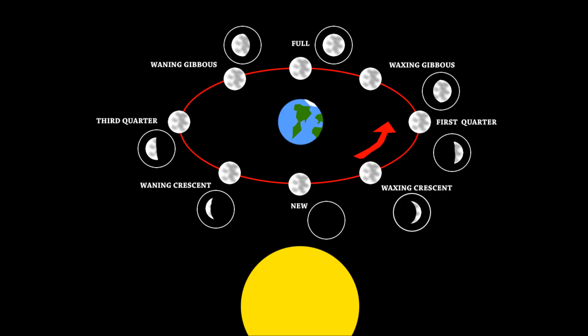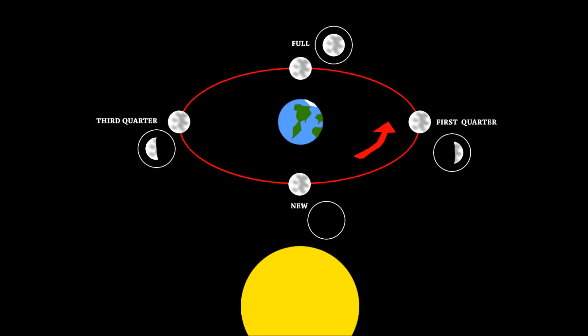For our purposes, to make this quick and easy, we're going to focus on the four quarter phases. These are the new moon, the first quarter moon, the full moon, and the third quarter moon.